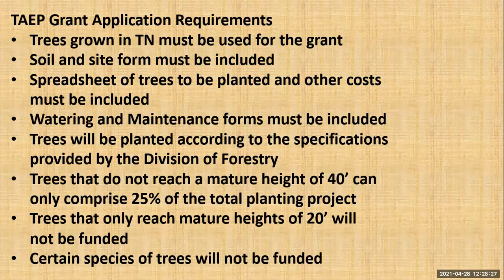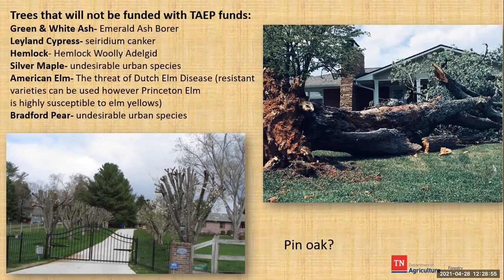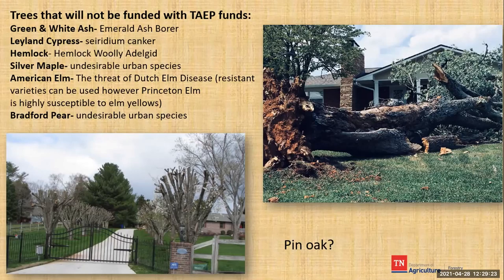There are certain tree species we will not fund at all — that doesn't mean you can't grow them, just that we won't help pay for those. Obviously, green and white ash are susceptible to the emerald ash borer. Leyland cypress is susceptible to seiridium canker. Hemlock is affected by the hemlock woolly adelgid and can't really be grown successfully in most of Tennessee outside of Upper East Tennessee. Silver maple is an undesirable urban species — I passed by one repeatedly that was diseased, infected, and rotten, and the day I came by and it had fallen over, I was glad it didn't hit their house. The American elm faces the threat of Dutch elm disease — resistant varieties like the Princeton elm can be used, though Princeton elms are now being found highly susceptible to elm yellows.